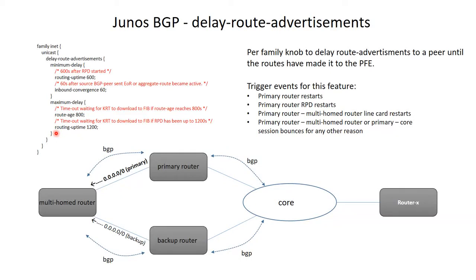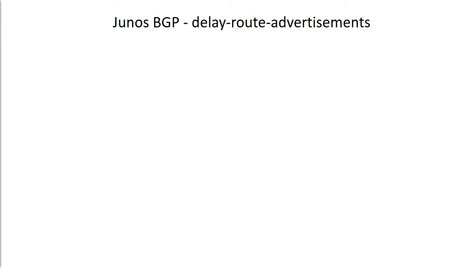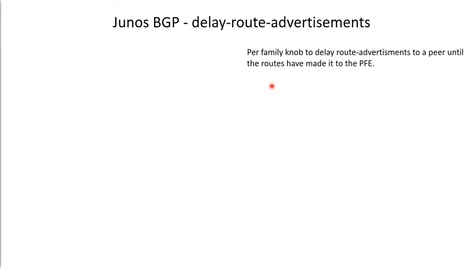This is a short video on a relatively new Junos BGP knob called Delay Route Advertisements, which serves to help with convergence of BGP — specifically convergence of traffic going through a certain router when a backup path is available. This is a per-family knob to delay route advertisements until the routes have made it to the PFE.